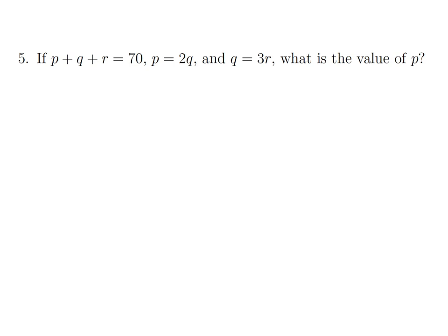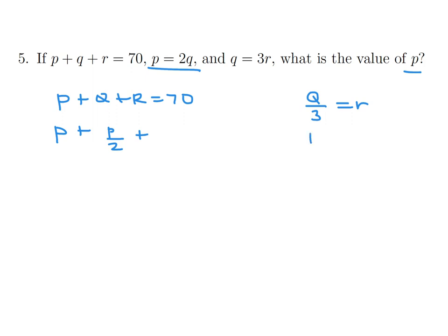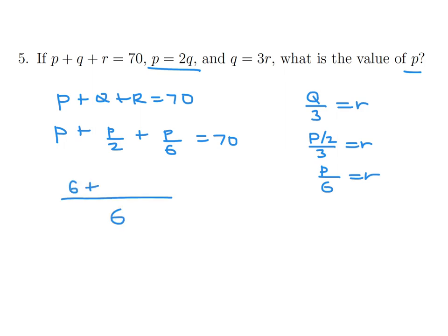Given p plus q plus r equals 70, p equals 2q, and q equals 3r, what is the value of p? Express everything in terms of p: q equals p over 2, and r equals q over 3 equals p over 6. Substituting: p plus p over 2 plus p over 6 equals 70. With common denominator 6: 6p plus 3p plus p equals 10p equals 420, so p equals 42.